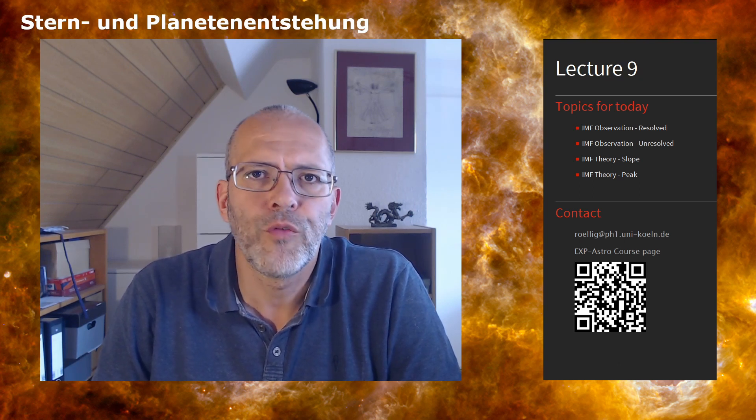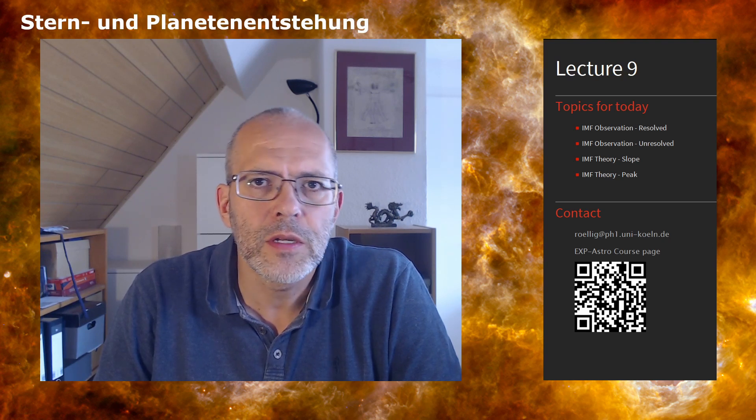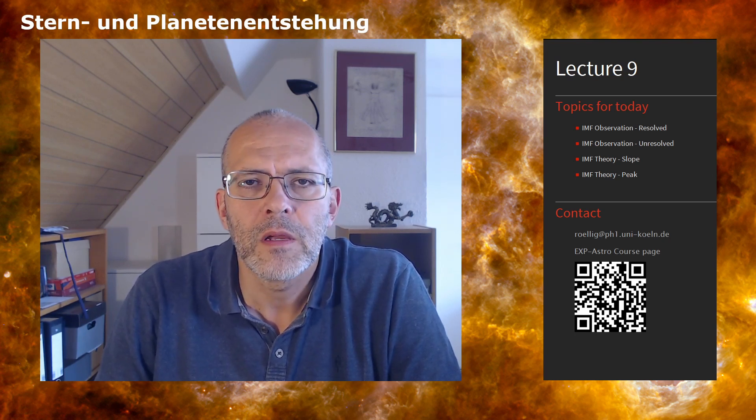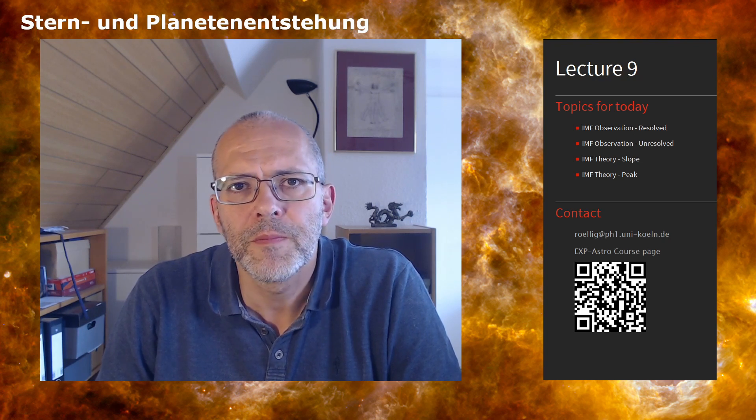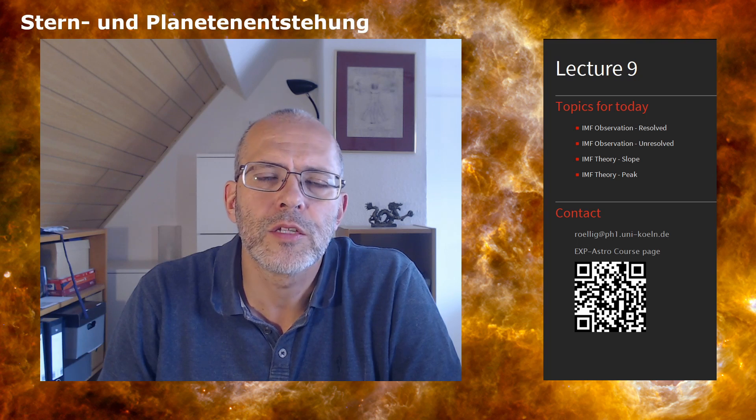We will have four sections today. In the first section we talk about observations of resolved stellar populations, so nearby regions where we can identify individual stars and do statistical analysis in order to determine the initial mass function. The second section is on observations of unresolved stellar populations, primarily in external galaxies, where we have to derive the initial mass function from the observed luminosity properties of galaxies.